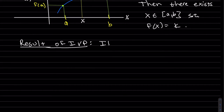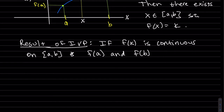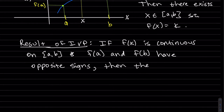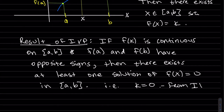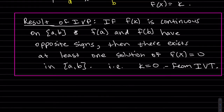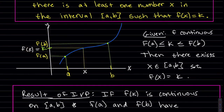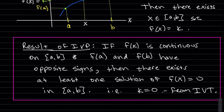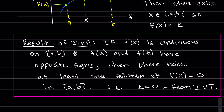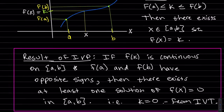So a result of it is: if the y values at the endpoints of this interval — f(a) and f(b) — if they are opposite signs, one's positive and one's negative, well then zero is in between them. So zero is our k.